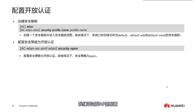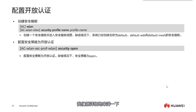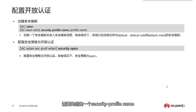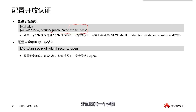In previous courses we covered the configuration of FAT APs. In configuring FAT APs, we mentioned security templates. Here we will go into detail on how to configure security templates. First, if you want to configure, you need to create a security profile name, which is the security template.